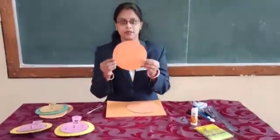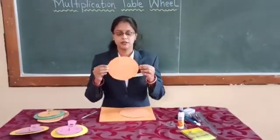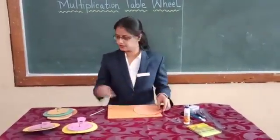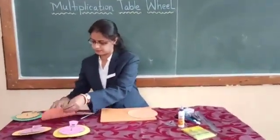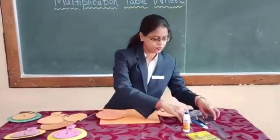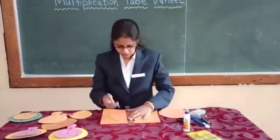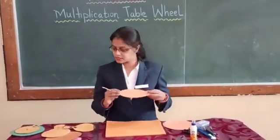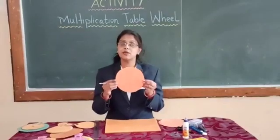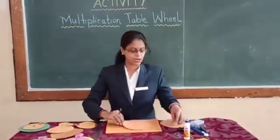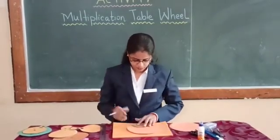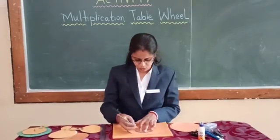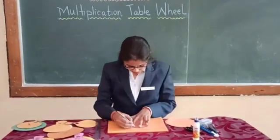First we need one paper — a card sheet that is circular with a radius of 8 cm. Once we take this, we draw a diameter. With the help of pencil and scale we draw the diameter. After this we are going to divide this circular sheet into 12 equal parts. To divide it into 12 equal parts we will be needing our protractor. With the centre, we will take 30 degrees and mark, so that we get exactly 12 parts.